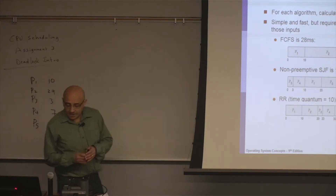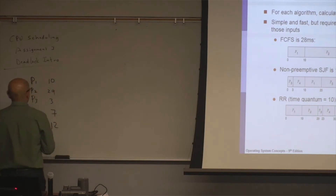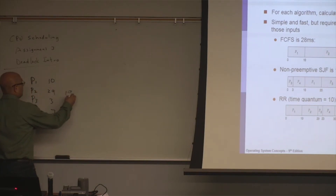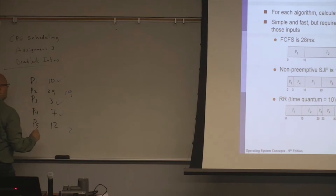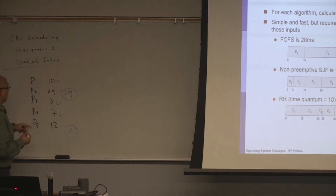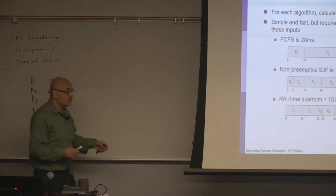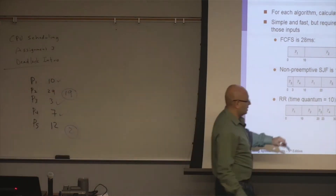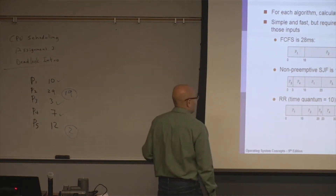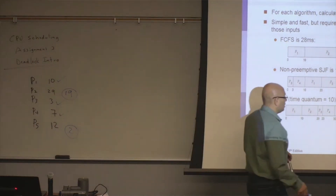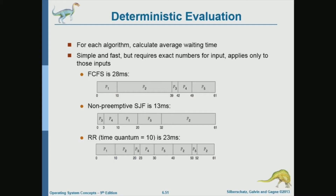After the first round, there are 19 time units left for P2 and 2 time units left for P5. All others are done. We give P2 another 10, then P5 gets 10 but only uses 2, then P2 gets the remaining 9.